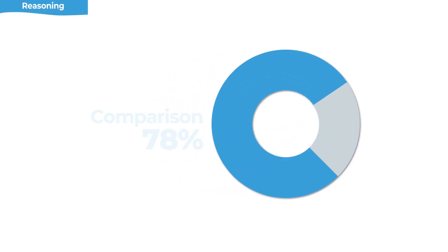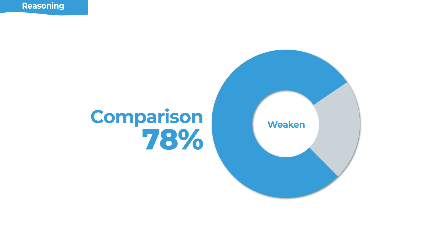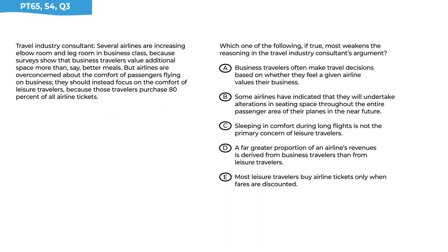The reasoning trick to pay most attention to on weakened questions is comparison. Comparisons typically work either by comparing two different things at a point in time — say, the population of city A versus city B — or by comparing one thing at two different points in time, such as the population of city A ten years ago versus today. If we can identify these comparisons within the argument, it'll give us a better chance at finding the gap. Go ahead and give this question a try, and when you're ready to continue, play again and we'll work through it together.